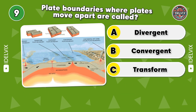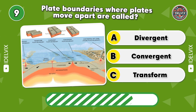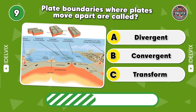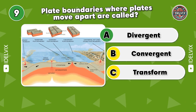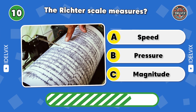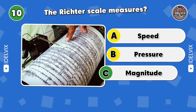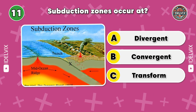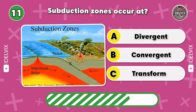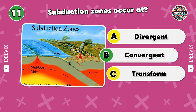9. Plate boundaries where plates move apart are called... Answer: Divergent. 10. The Richter scale measures... Answer: Magnitude. 11. Subduction zones occur at... Answer: Convergent.